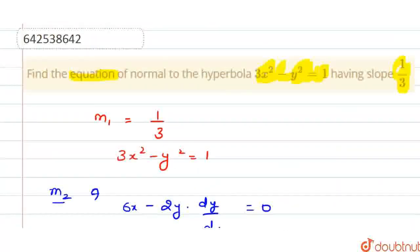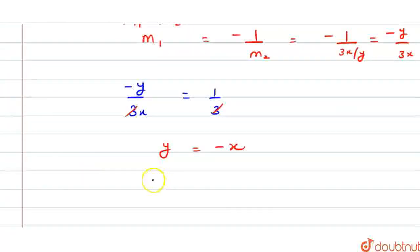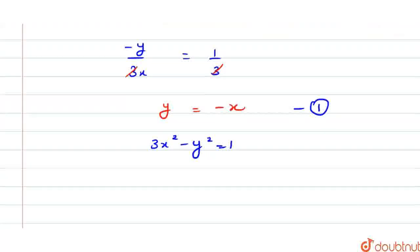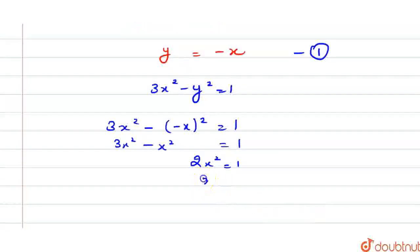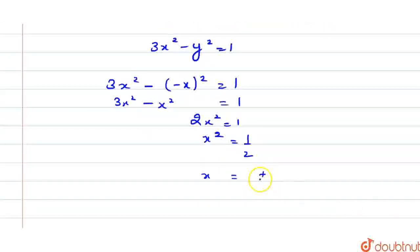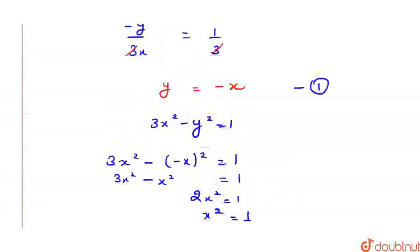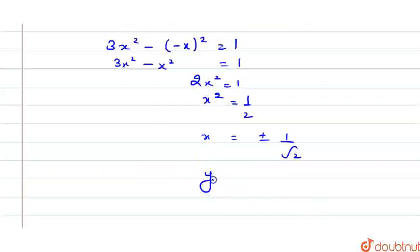Let us substitute y = -x into the equation of the hyperbola: 3x² minus y² = 1. Substituting y = -x gives 3x² minus (-x)² = 1, that is 3x² minus x² = 1, so 2x² = 1, which implies x² = 1/2, giving x = ±1/√2. And from y = -x, we have y = ∓1/√2.